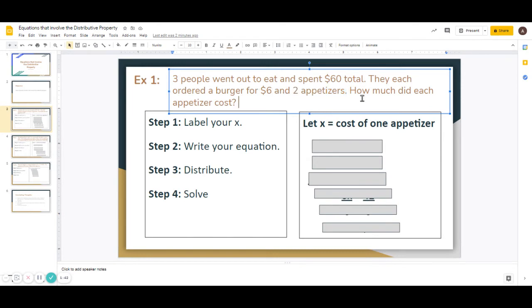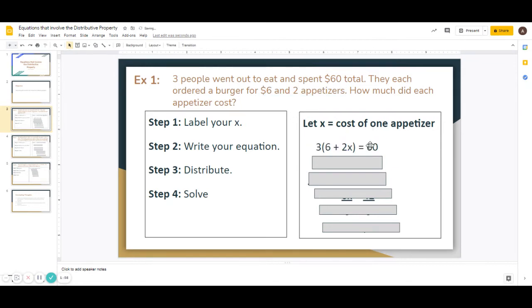So one full order is $6 for the burger and 2x for the cost of the appetizers. And so that full order, we're going to multiply that by the three people. So again, the three here represents the number of people that we're multiplying it by. Inside the parentheses, this is our order. So three times our order of 6 plus 2x is equal to 60.